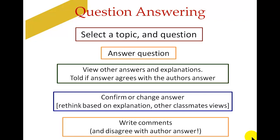So they answer their question, deal with the explanations, are told if their answer agrees with the author's answer, and can confirm or change their answer — a chance to do the calculation again or just have a rethink. They're then encouraged to write comments. If they think the distractor answers are ambiguous or there could be more than one right answer, they can say so. The only problem, which has come through in our evaluation, is that a lot of our students don't have the strategy to deal with that politely — they don't quite know how to say 'I think your question's not great, could you maybe rewrite it?' There have been a few comments that some students have been quite rude on it.